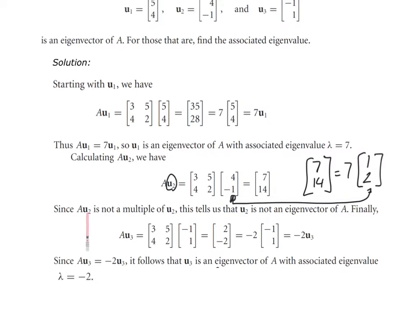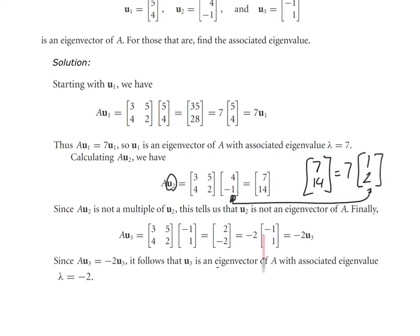Let's check U3. I multiply A by U3 and end up with 2 and negative 2. I can pull a negative 2 out — the reason is I need to get negative 1 and 1 in those two positions. So I can write A times U3 as a scalar multiple times U3, meaning U3 is an eigenvector with lambda equal to negative 2.